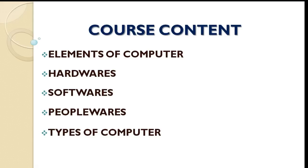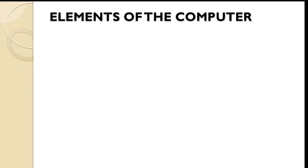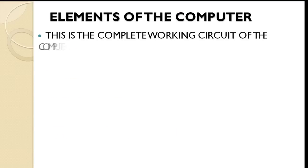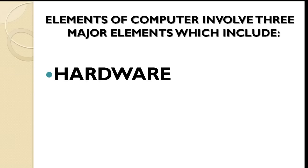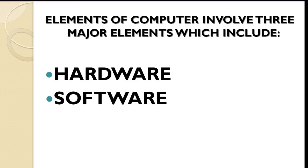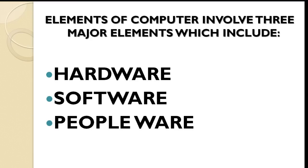So, what can we say about the elements of computer? The elements of computer can be seen as the complete working circuit of the computer. Elements of computer involves 3 major elements which include: 1. Hardware, 2. Software, and 3. Peopleware, also known as Humanware. We will be looking at these elements one after the other, starting from the hardware.